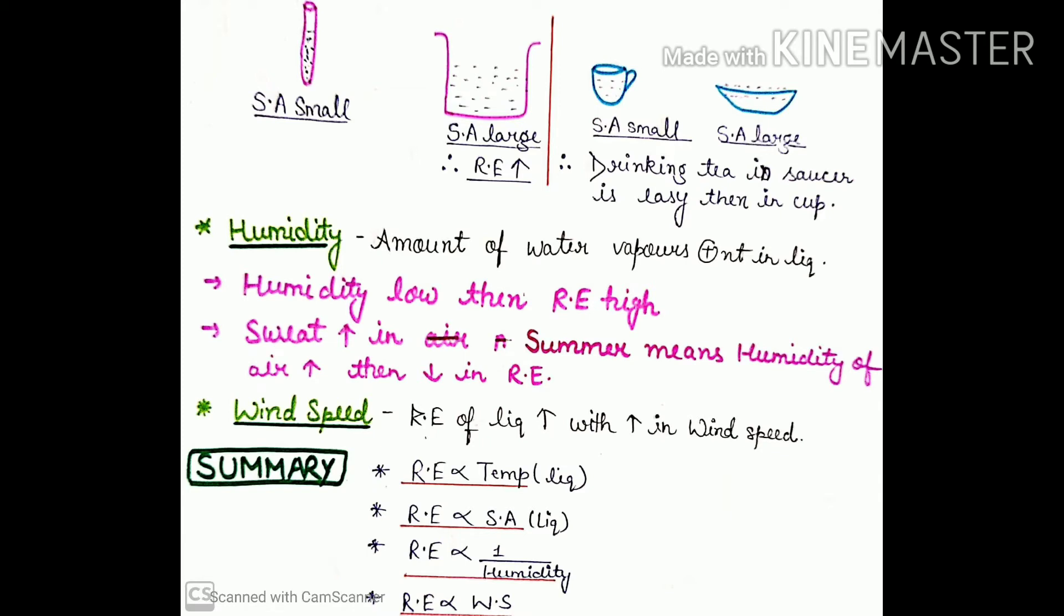Next thing is humidity. What is humidity? It's the amount of water vapor present in the liquid or air. Its abundance and concentration in water vapor is what defines humidity.